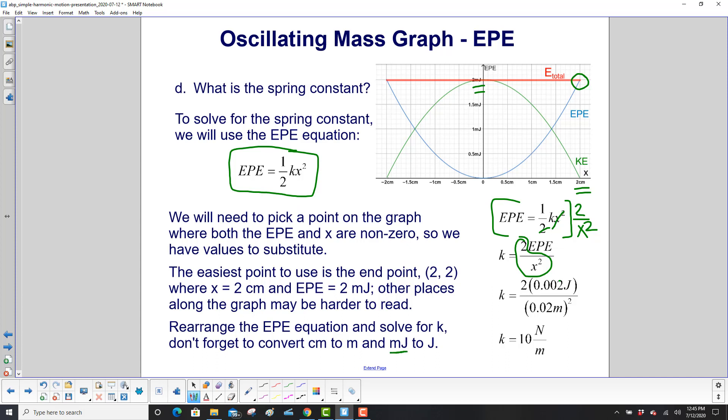Plug in the numbers, and be sure to convert centimeters to meters and millijoules to joules. So to go from millijoules to joules, move the decimal place three to the left, and centimeters to meters, move the decimal place two to the left. So here they are, because you have to use joules and meters for the equation, so we can get newtons per meter in the answer. So k will be 10 newtons per meter.